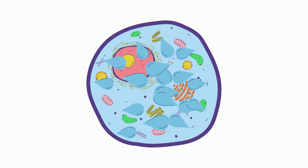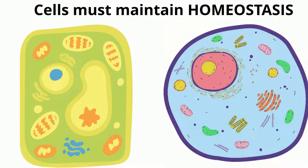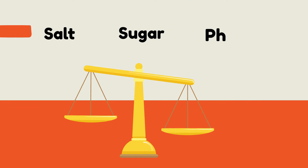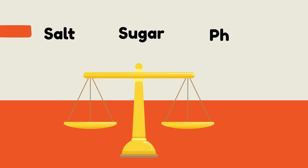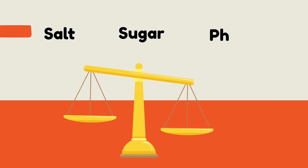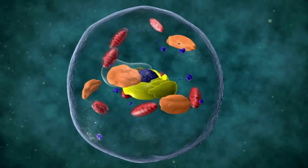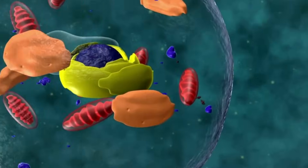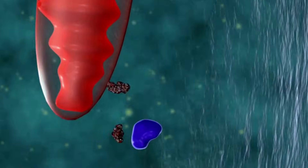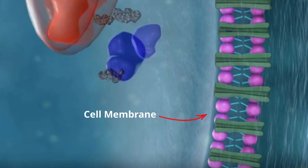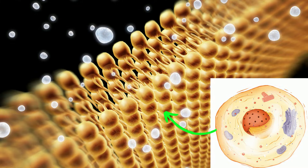Homeostasis is also important for concentrations of salt and sugar, as well as pH, that need to be kept in balance. The main organelle responsible for maintaining homeostasis in cells is the cell membrane. The cell membrane plays an important role in homeostasis by regulating the movement of materials into and out of the cell. The structure of the cell membrane allows certain materials to pass in and out of the cell.